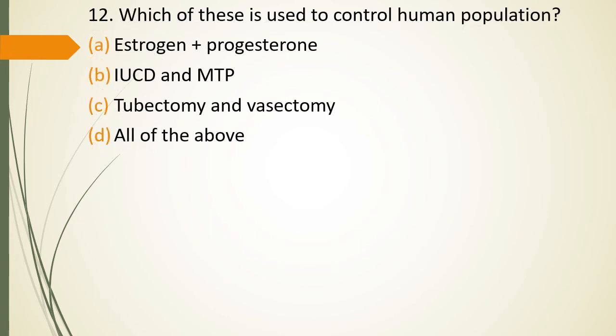Question 12. Which of the following is used to control human population? Estrogen plus progesterone, IUCD and MTP, tubectomy and vasectomy or Option D, All of above. The correct answer is Option D. All of above.